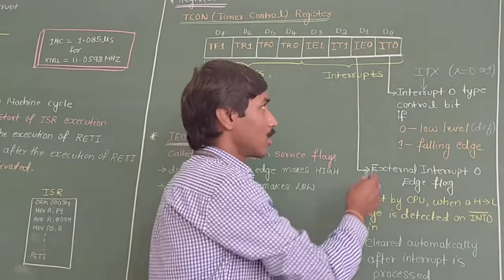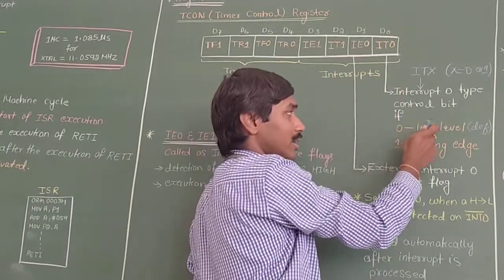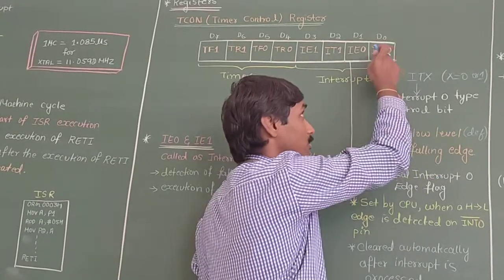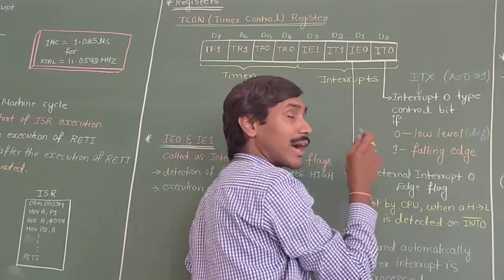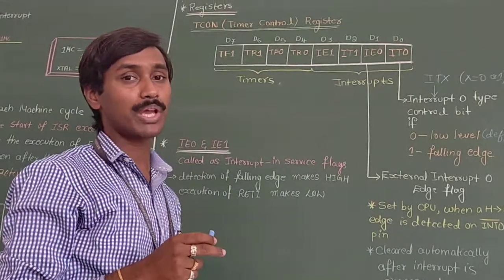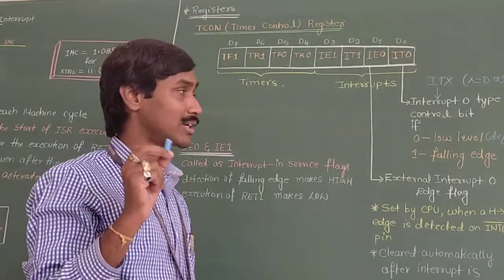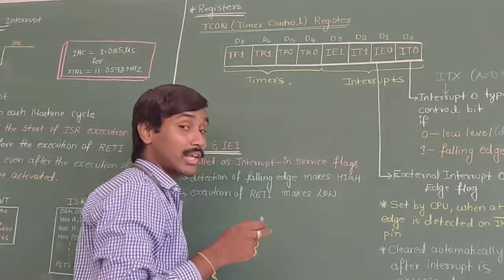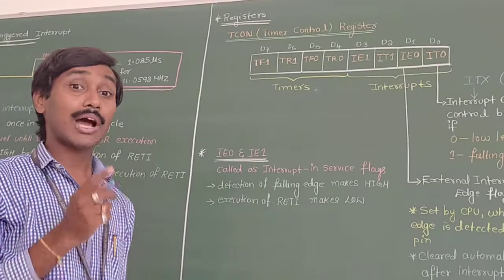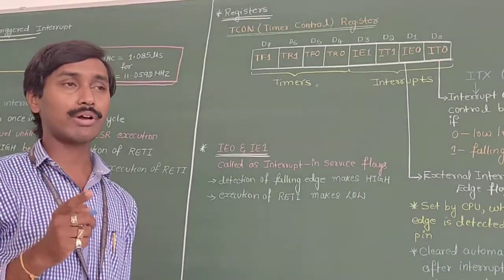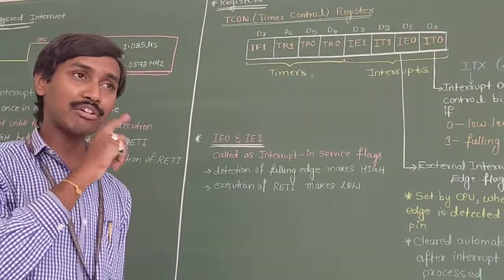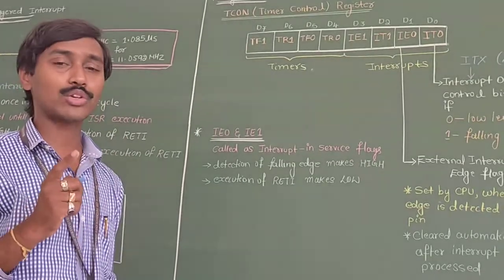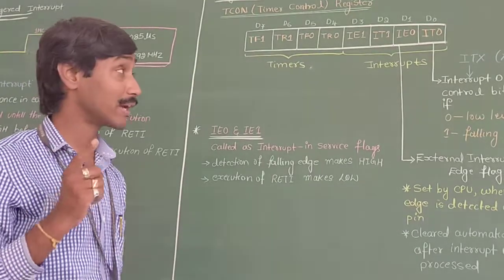If the value of IT0 is 0, then the INT0 interrupt will be low level triggered. If IT0 is 1, then the INT0 interrupt is going to be negative edge triggered, that is a falling edge trigger. Similarly, if IT1 is 0 then INT1 is low level activation, and if IT1 is 1 then the INT1 pin is going to be edge triggered — that is a falling edge trigger.